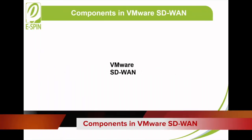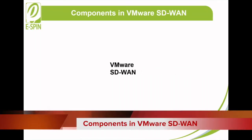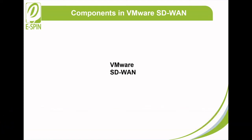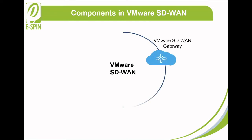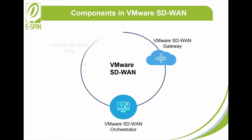VMware SD-WAN is a software-as-a-service solution that incorporates three major components: VMware SD-WAN Gateway, VMware SD-WAN Orchestrator, and VMware SD-WAN Edge.